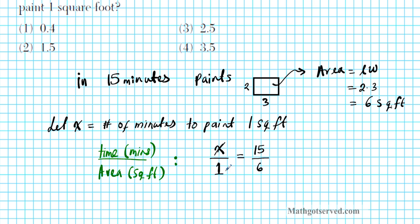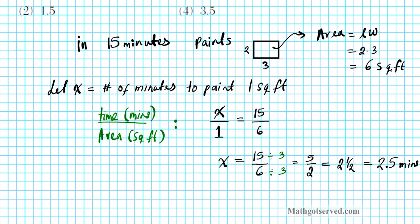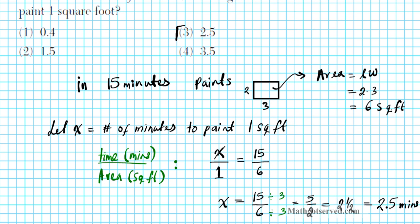We can simply solve this: X equals 15 over 6. Dividing numerator and denominator by the GCF, which is 3, yields 5 over 2 — that's 2 and a half, or 2.5 minutes as a decimal. The answer is option number 3: it will take the student 2.5 minutes to paint one square foot.